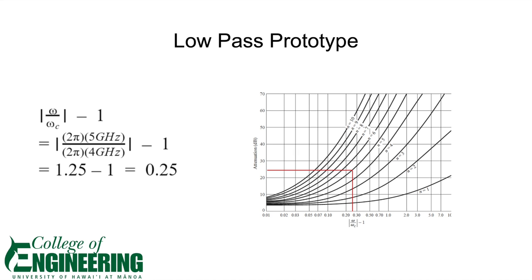To start off our low-pass prototype, we used a magnitude of omega over omega c minus 1 to get 0.25. We then used Pozar's 3dB ripple graph and plotted the value of 0.25 on the x-axis to find the intersection of at least 20dB, which we found to be at n equals 5.